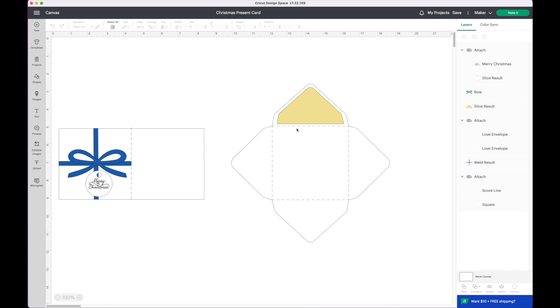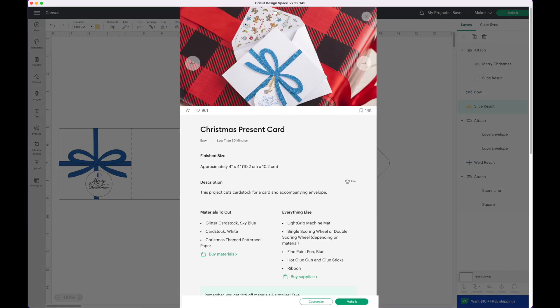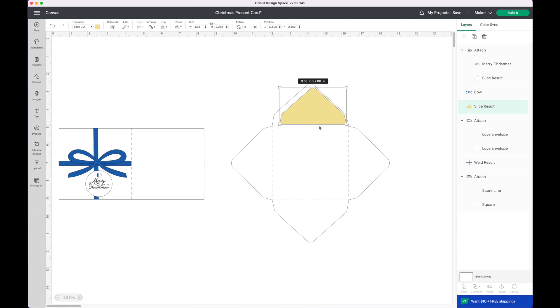Alright so we have the envelope and this piece here this yellow piece is your pattern paper. So we go to the very top where it says Christmas present card. You'll see that preview window there they're using a liner right there. That's what that yellow piece is. Then we have the card base which is this piece here. This measures 8x4 so when folded our card will be 4x4.